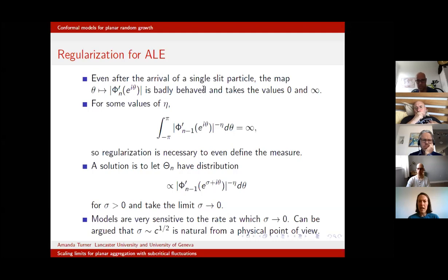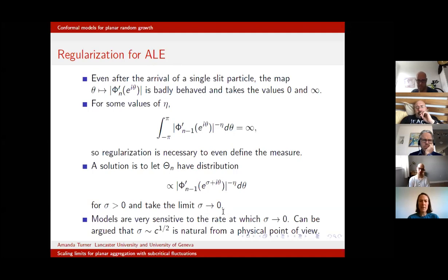One solution is to introduce a regularization parameter σ, allow θn to have distribution proportional to the derivative evaluated a small distance away from the cluster boundary, and then take the limit as the regularization parameter tends to zero. But there's a twist: the models are extremely sensitive to the rate at which σ tends to zero.